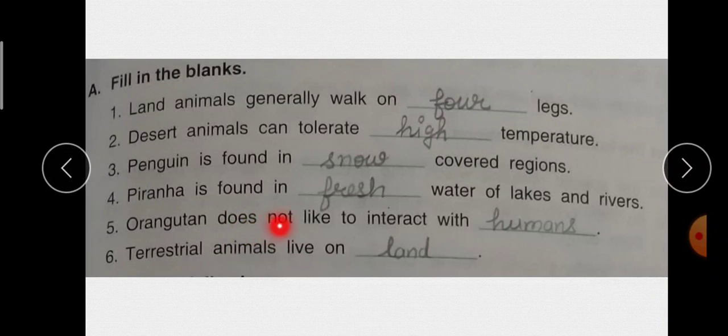Fifth है argantons does not like to interact with dash. कि जो argantons है किस के साथ interact नहीं करता? Humans के साथ. ठीक है? Last है terrestrial animals live on there. कि terrestrial animals हैं कहां पे रहते हैं? Live on land. Okay.